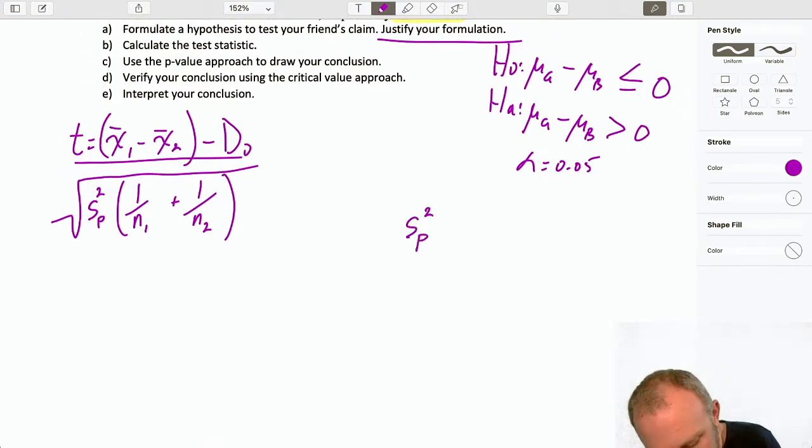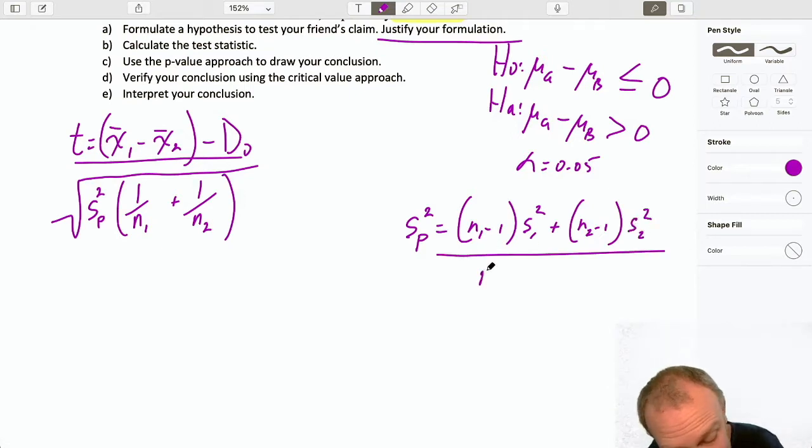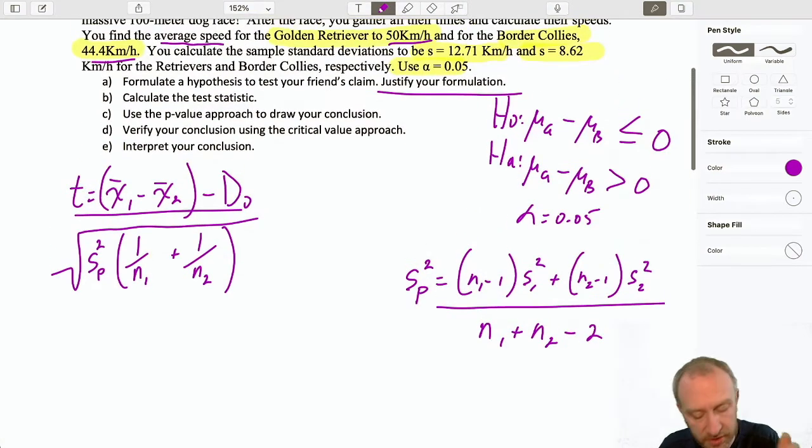So, before I can calculate that test statistic, I need that pooled estimator, which looks something like this. And then, this gives us an easier calculation for degrees of freedom.